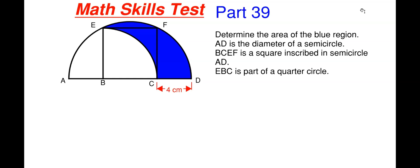This will be our 39th part in this math skill series. What we have going on here is that we have to determine the area of the blue region shown. We are told that A to D is the diameter of a semicircle, and then B, C, E, and F is a square that is inscribed within our semicircle AD.